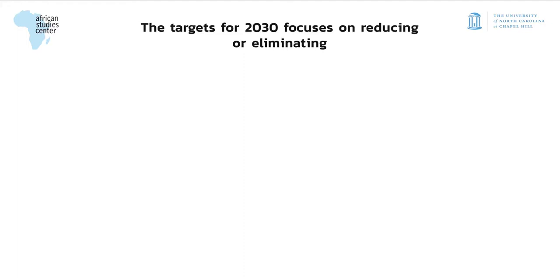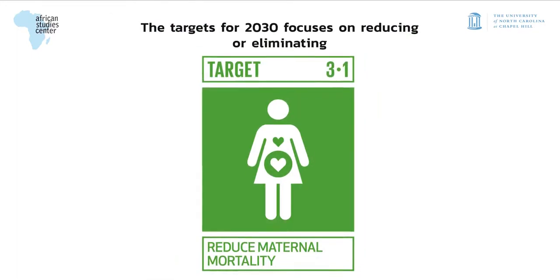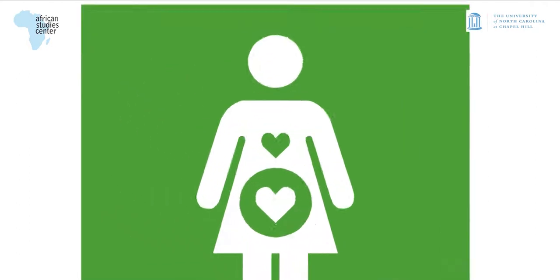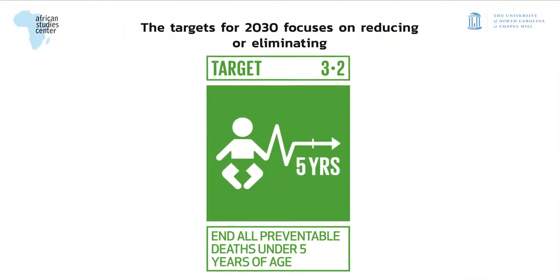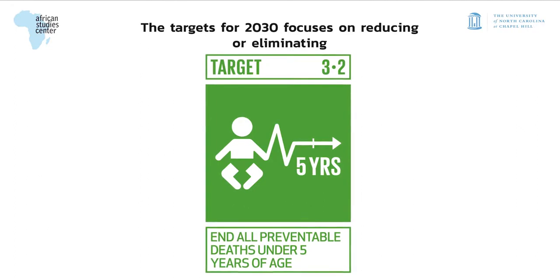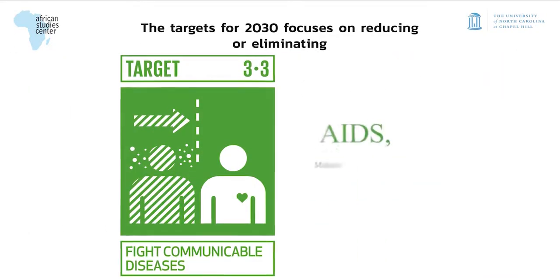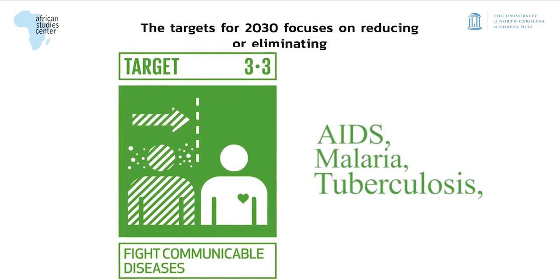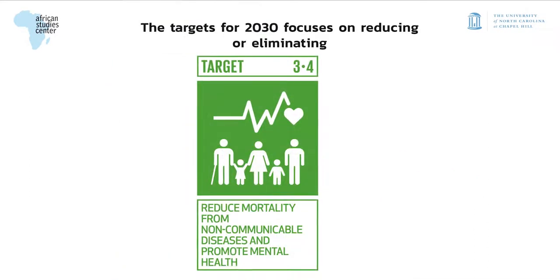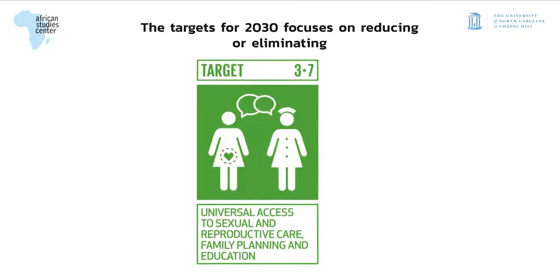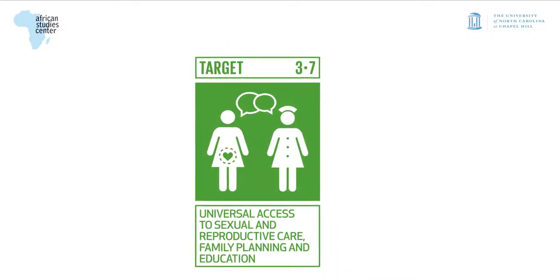The target for 2030 focuses on reducing and eliminating global maternal and child mortality, preventable deaths of newborns and children under 5 years of age, diseases such as AIDS, malaria, tuberculosis, neglected tropical diseases, waterborne diseases, road traffic accidents, and access to sexual and reproductive health services.